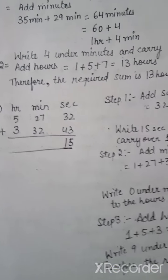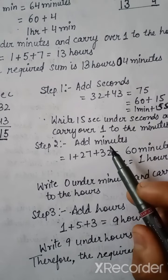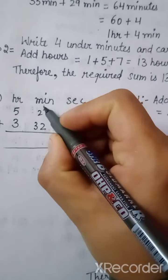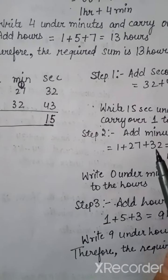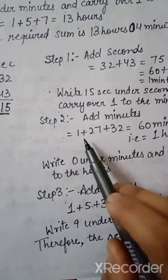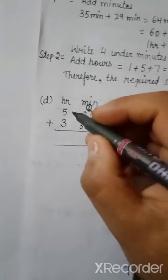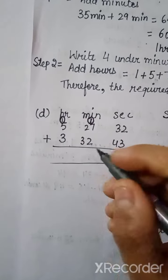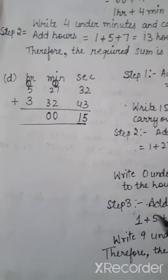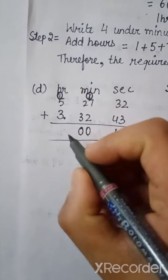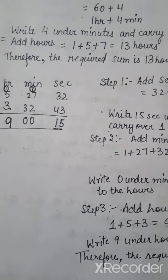Now the next step is to add minutes, and carry over that 1 minute. 27 plus 32 plus 1 equals 60 minutes. Since 60 minutes equals 1 hour, we carry 1 to the hours column and write 0 under the minutes column. The last step is to add hours: 5 plus 3 is 8, plus 1 carried is 9. So the required answer is 9 hours, 0 minutes, and 15 seconds.